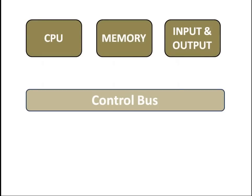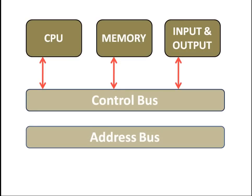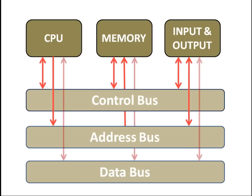The control bus is used to transmit different commands or control signals from one component to another. Many components are connected to one another through buses, and each component is assigned a unique ID called the address of the component. The address bus carries the address of memory allocation from the microprocessor to the main memory.